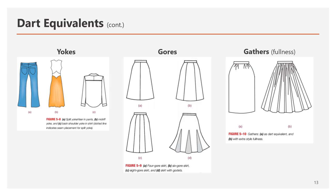For gathers (figure 5.10), you can use dart equivalents to create fullness around the waist area, or add extra style fullness by adding more fabric, folding it together, and sewing it — making the skirt larger and creating a full look.